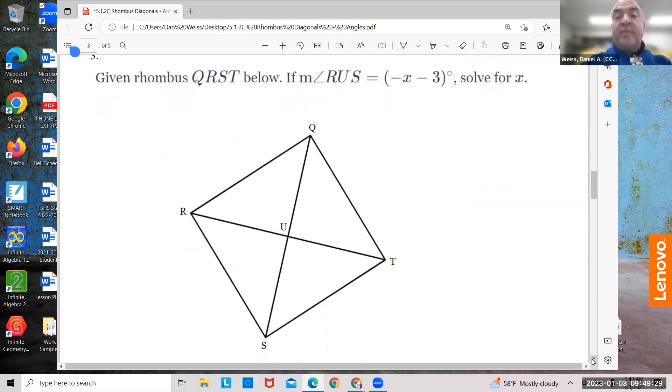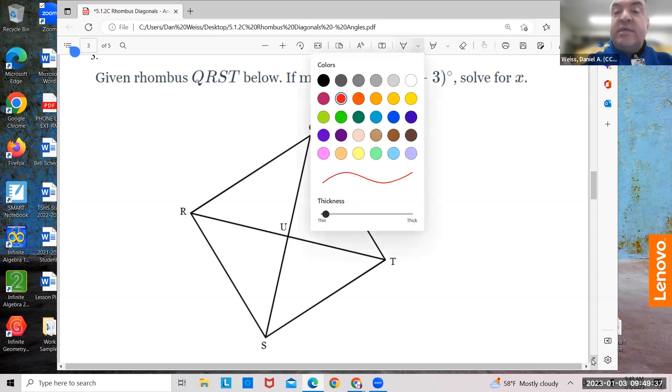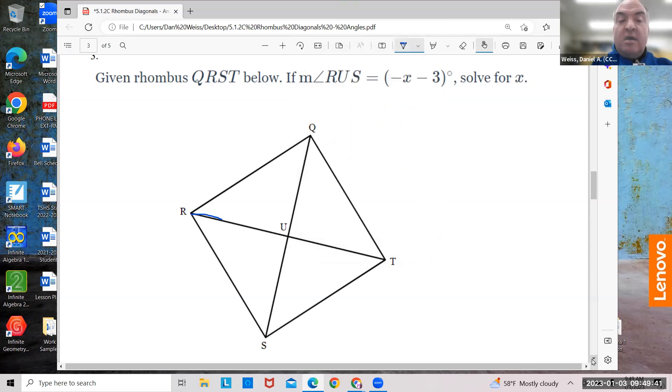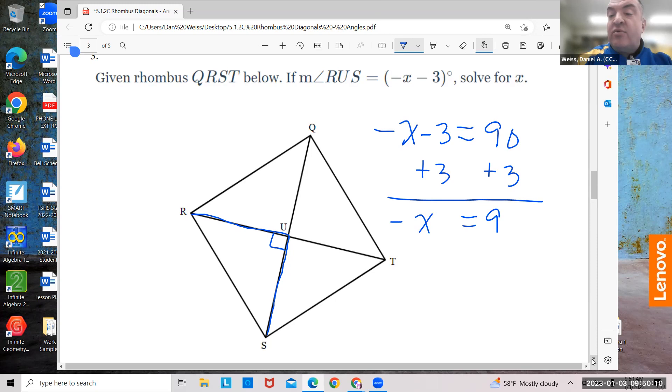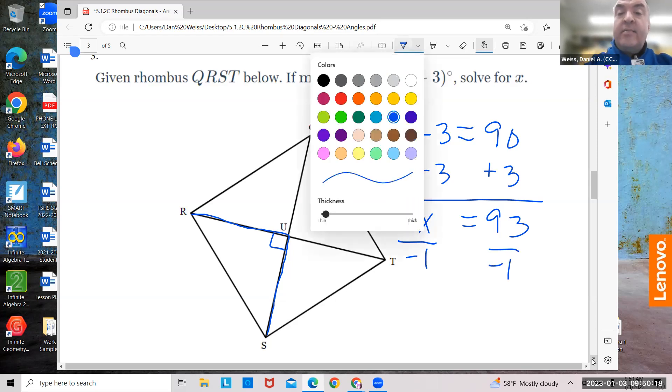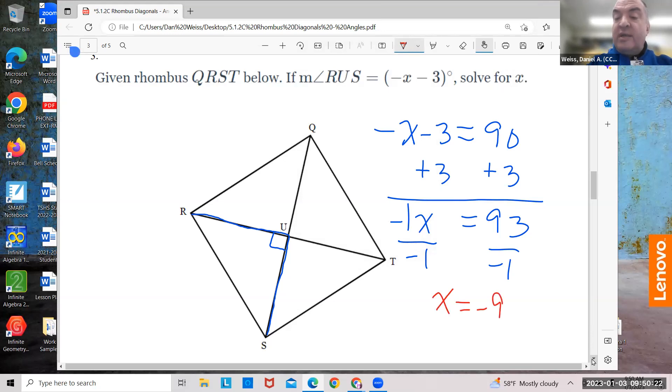All right. Same thing. Rhombus QRST. And it says angle RUS. What's angle RUS? Here it is. Start at R, go to U, and then go to S. RUS is this angle right here. It's a 90 degree angle. So, in this case, negative X minus 3 equals 90. So, we're going to add 3 to both sides. And you get negative X equals 93. That's the same as negative 1X. You divide by negative 1, and X equals negative 93. Easy.